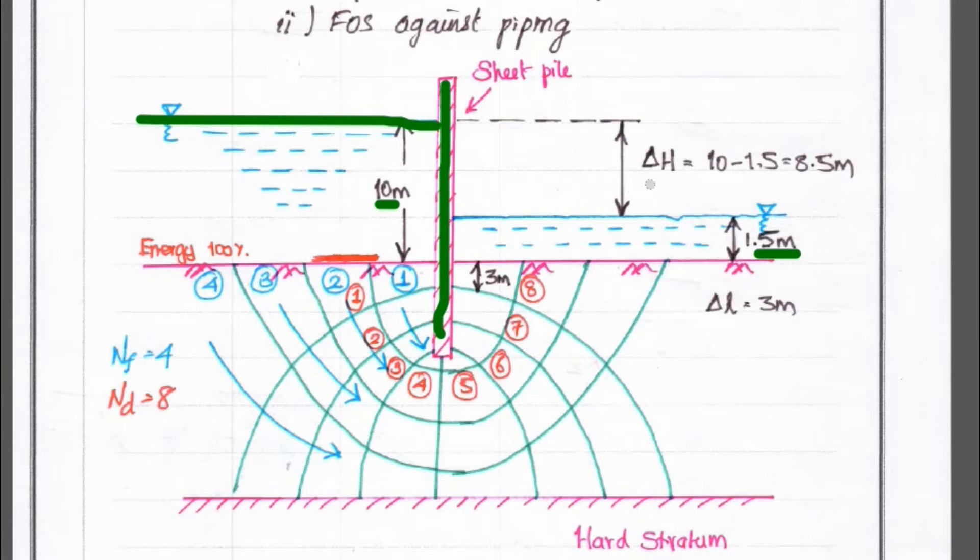So next, the change in height equal to 10 meter minus 1.5 meter. So, that is del h is equal to 8.5 meter.